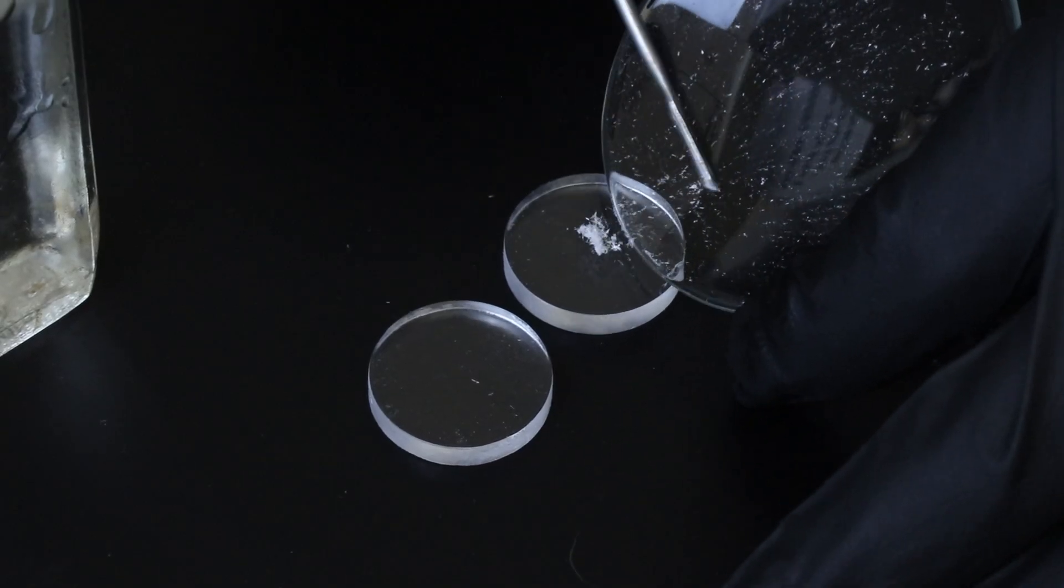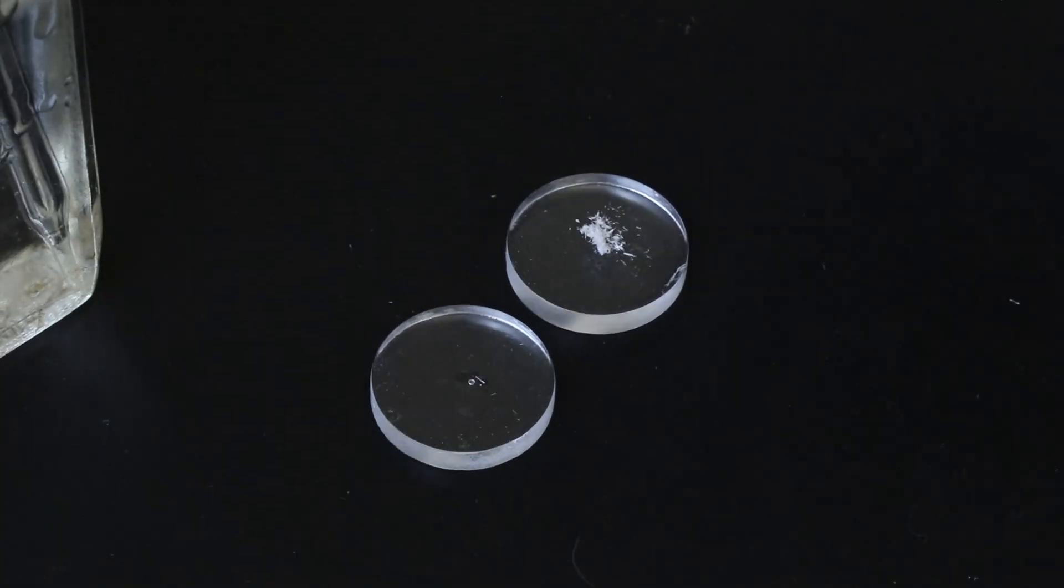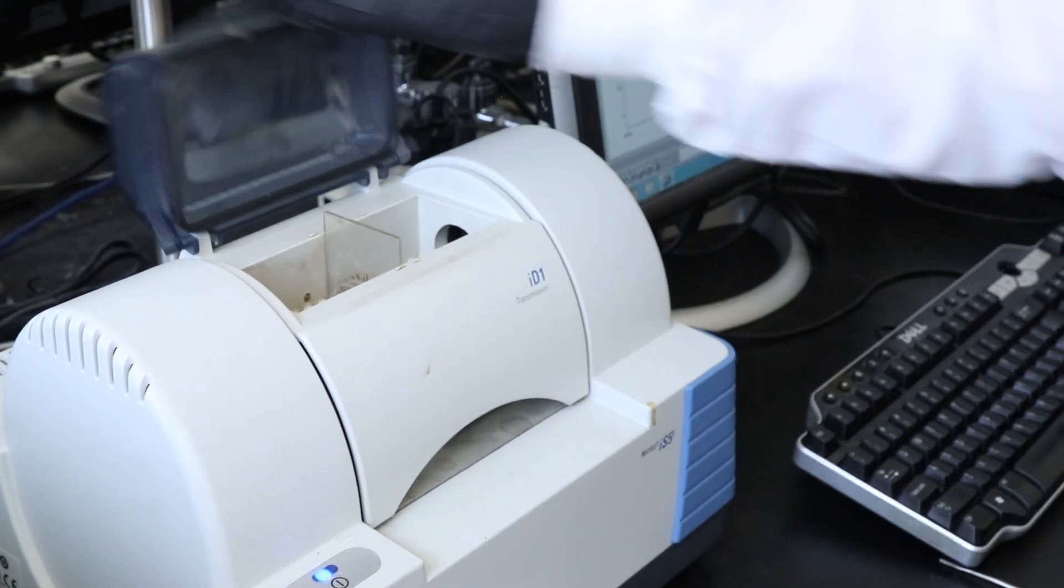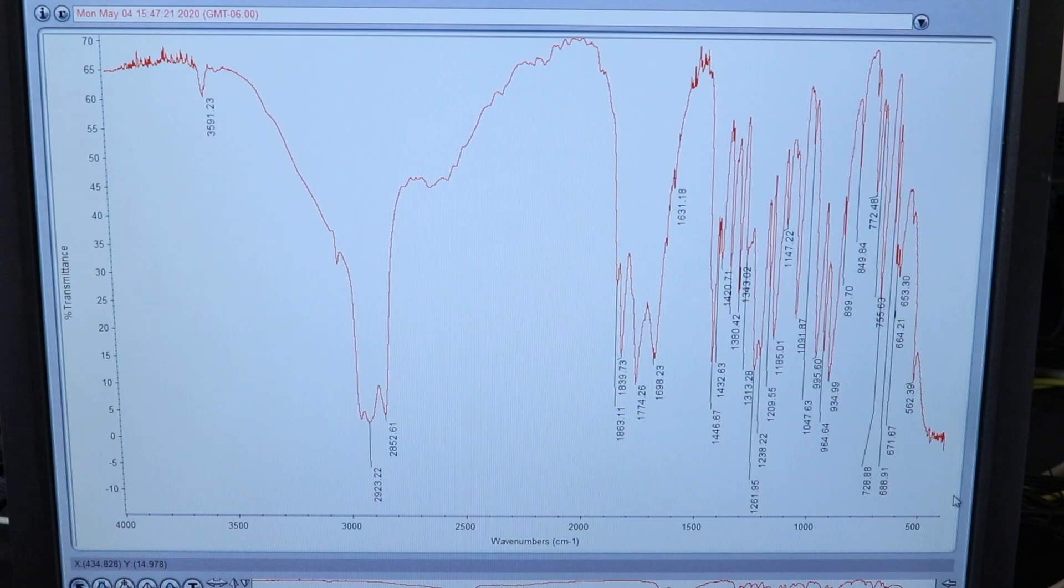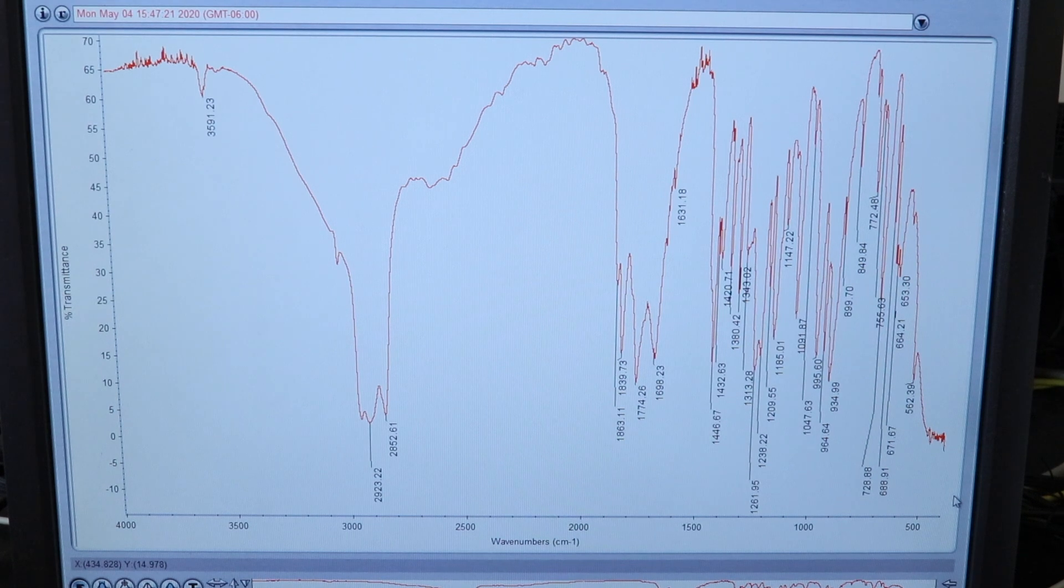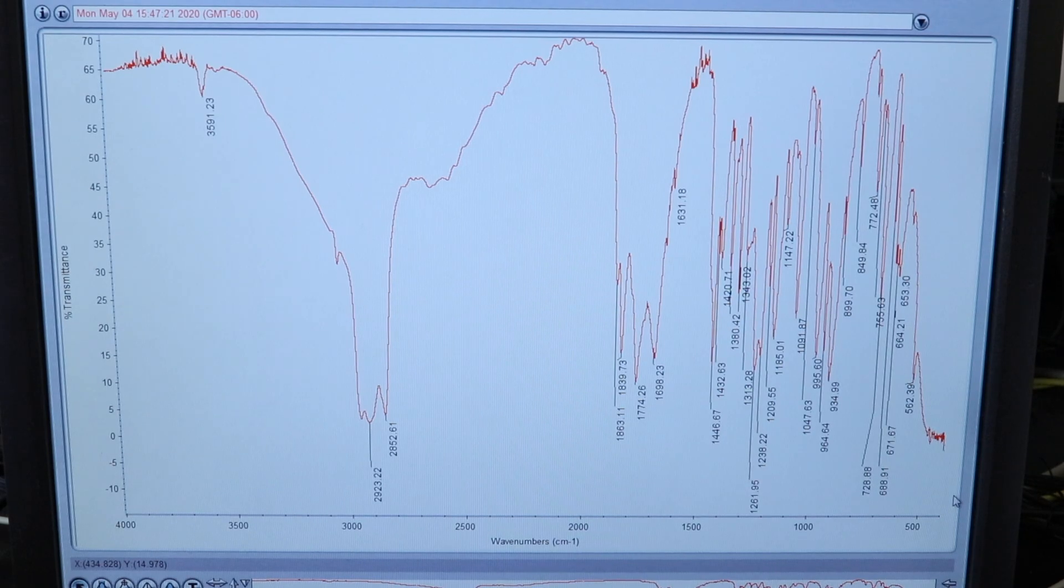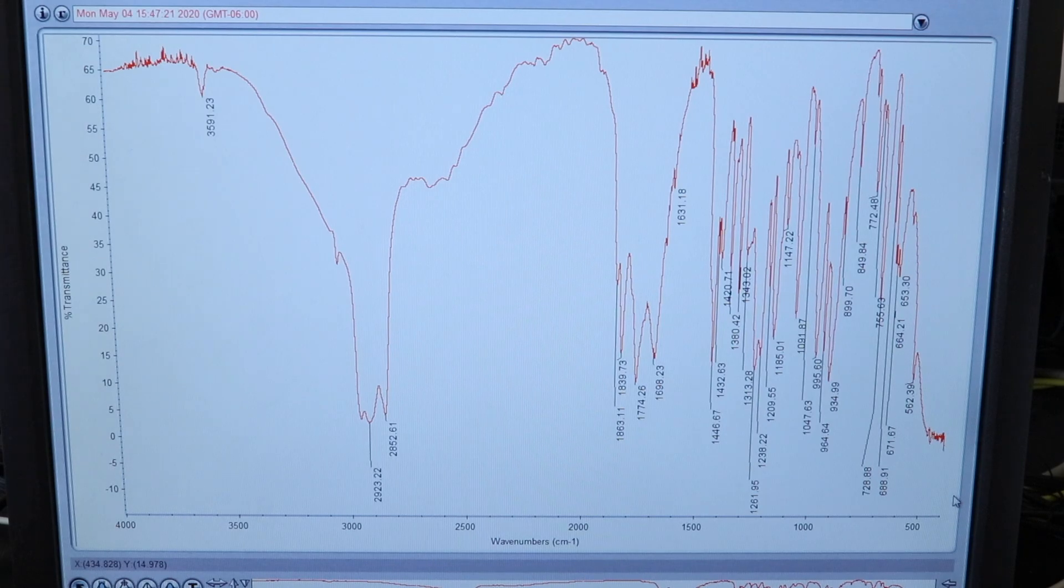I'll add what little product I have to the salt plates and then use the nujol mull technique to run the IR spec since it is a solid product. And there it is, there is definitely some diacid contamination in there. We can see the carboxylic acid OH and an additional carbonyl peak around 1698 it looks like, but we do see the two carbonyl peaks for the anhydride around 1840 and 1774, and that along with the melting point does indicate that the product was produced and was the major component of the crystals isolated.